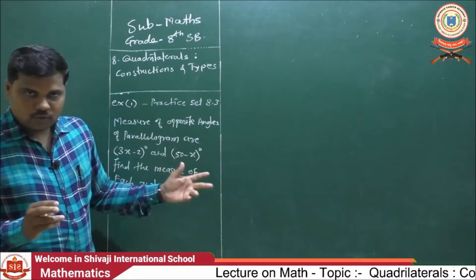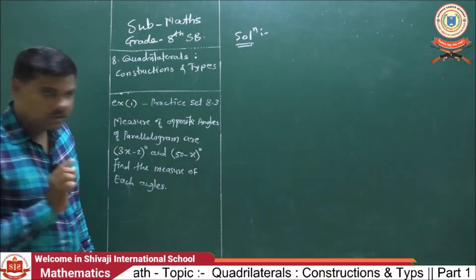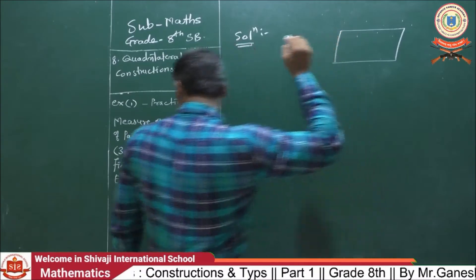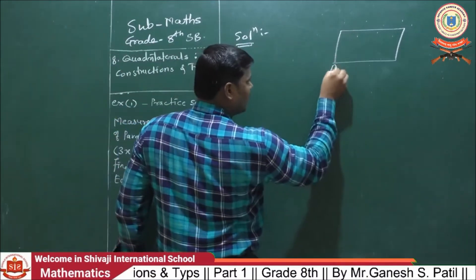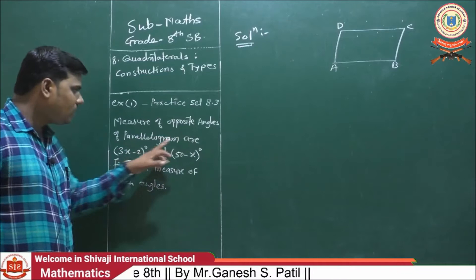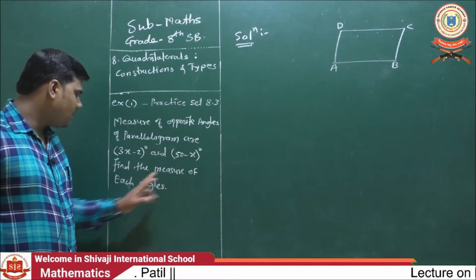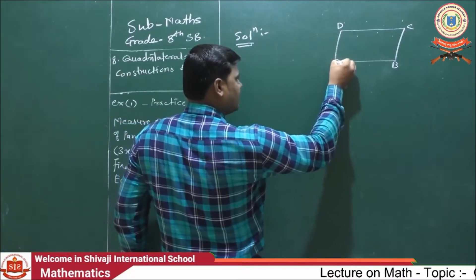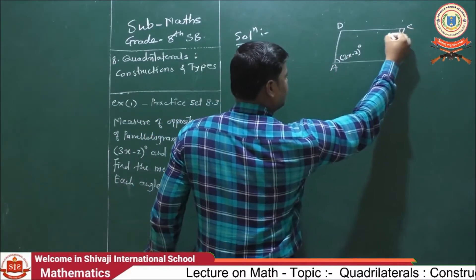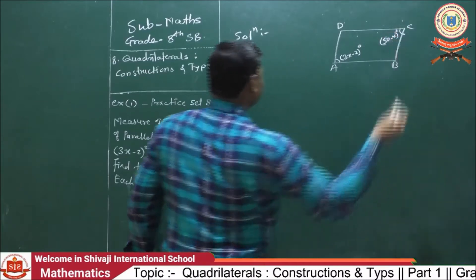Now, we are going to solve that example. This is the solution. We need to draw the figure here. Suppose this is the parallelogram, A, B, C and D. The measures of opposite angles of parallelogram are 3x minus 2 degrees and 50 minus x degrees.